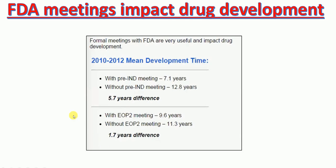Not only this, with an end-of-phase 2 meeting, the time taken for drug development is 9.60 years. But without an end-of-phase 2 meeting, the time taken is 11.3 years — a difference of 1.70 years. So meetings with the FDA can expedite the drug development process. Therefore, it is important to have those meetings with the FDA.